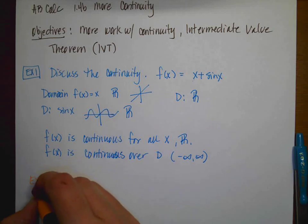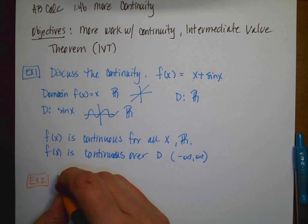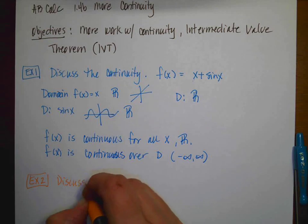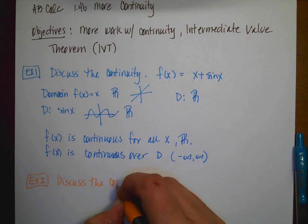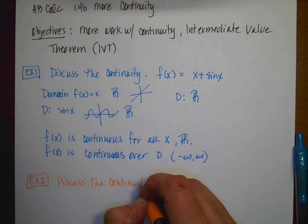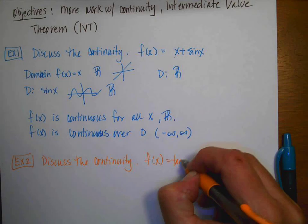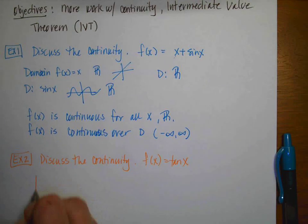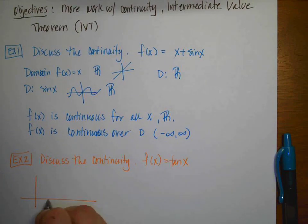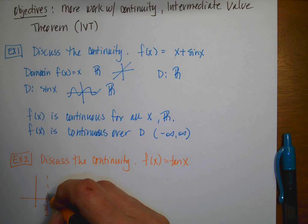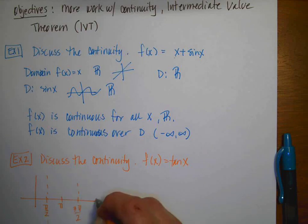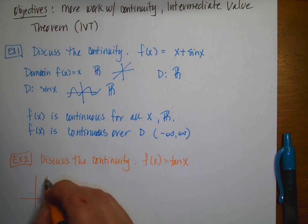All right, next example, like again is going to say, discuss the continuity. And this particular function is going to be f(x) = tan(x). Remember that tan(x), so the period is π, and the asymptotes occur at half of the period. So then this is 3π/2, and then this would be 2π.